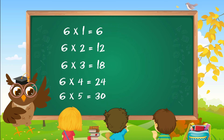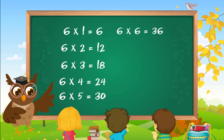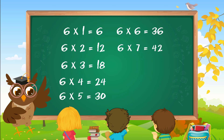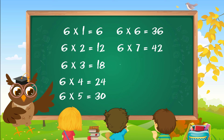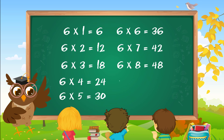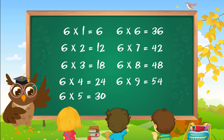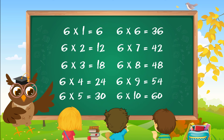Six 5s are 30. Six 6s are 36. Six 7s are 42. Six 8s are 48. Six 9s are 54. Six 10s are 60.